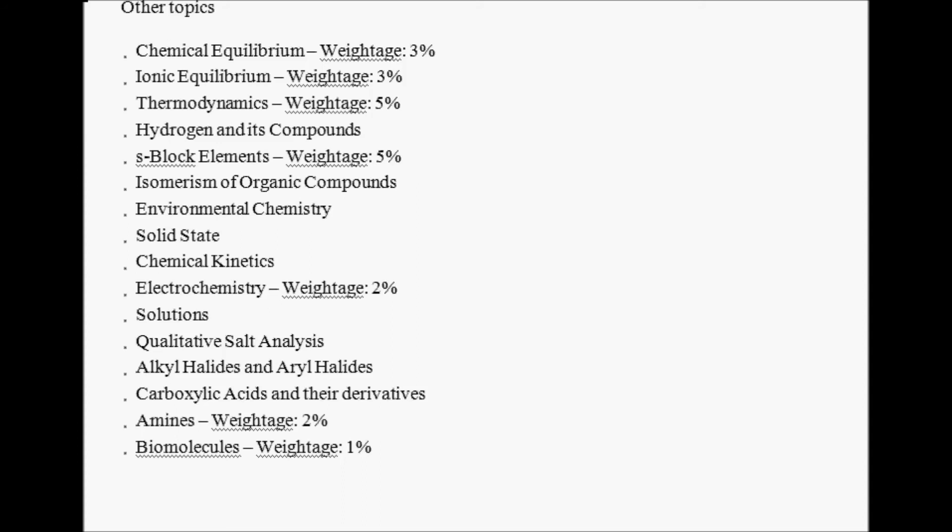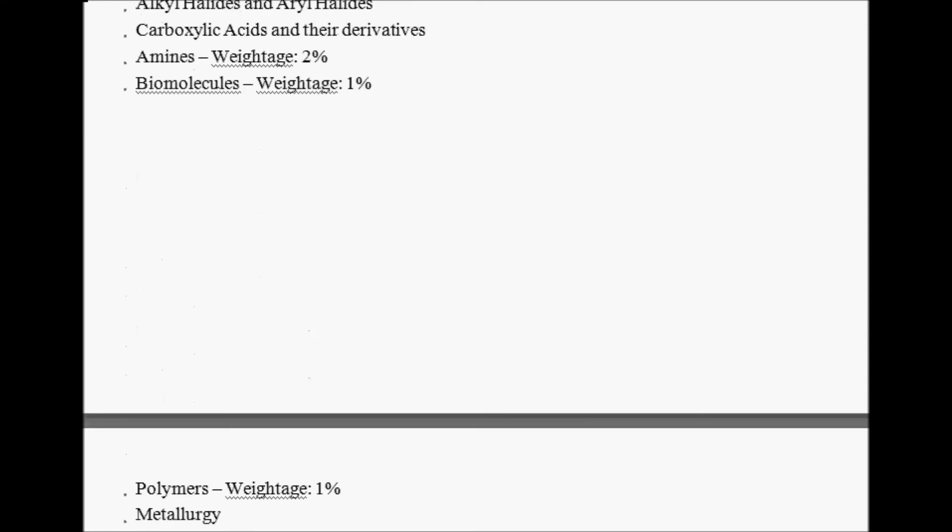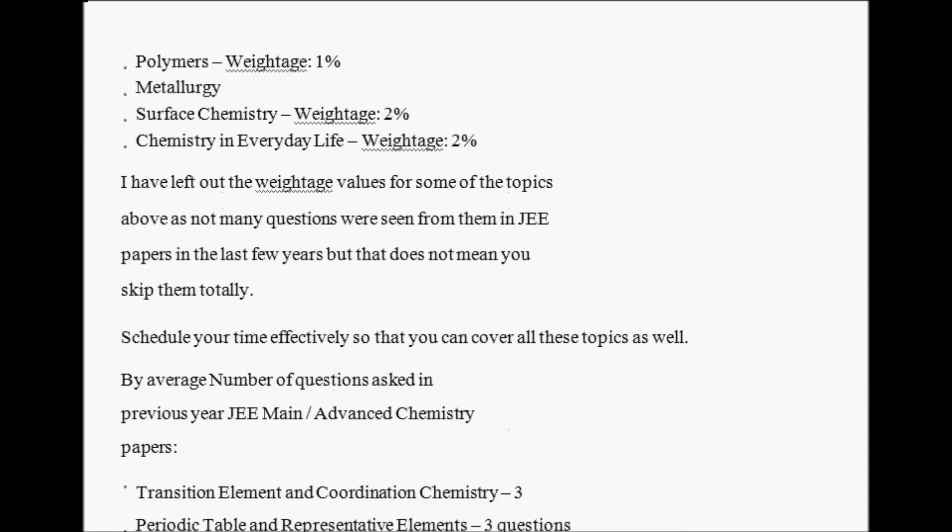Isomerism of Organic Compounds, Environmental Chemistry, Solid State, Chemical Kinetics. Electrochemistry will be 2%. Solution Colligative Properties, Salt Analysis. Alkyl Halides, Carboxylic Acids and Derivatives. Amines, Biomolecules. Now the last topics are Polymers - weightage 1%. Metallurgy, Surface Chemistry - you can expect 2%, maybe not. Most of the time questions are asked from other chapters rather than Surface Chemistry.